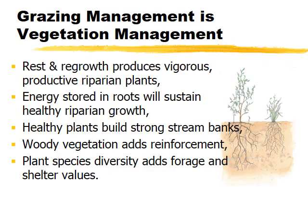The bottom line is that grazing in riparian systems is vegetation management — keep your eye on the vegetation. We need enough rest for regrowth and vigorous riparian obligate species along the stream, and energy stored in the roots to sustain those plants. Healthy plants build strong stream banks, and we need woody vegetation for reinforcement. A diversity of both herbaceous and woody plants holds the stream bank and also provides shelter and habitat for wildlife and aquatic species.